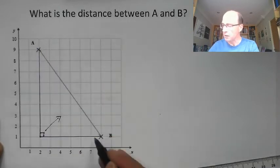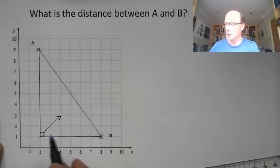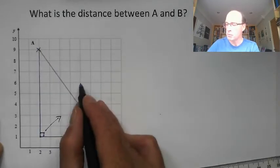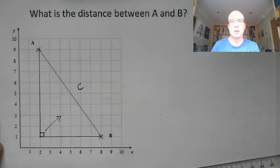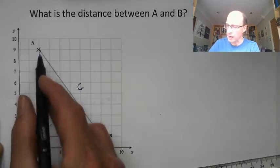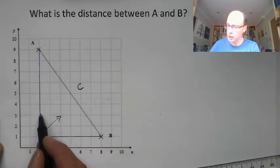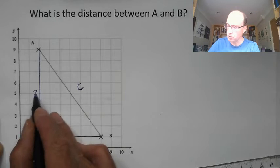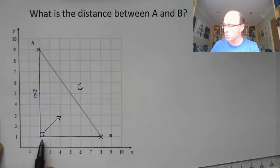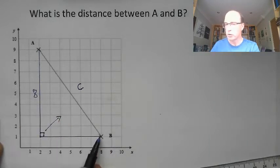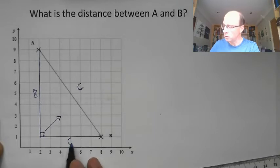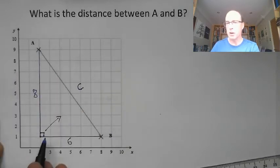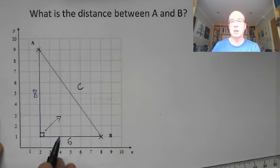So the length AB that I'm trying to work out is opposite my right angle, so it must be my hypotenuse, my longest side, which I'm going to call C. Well I also know how long these are, because I can count my squares. I've got 2, 4, 6, 8 squares. And across the bottom I've got 2, 4, 6 squares there. So I've gone 6 squares across, 8 squares up, got a right angle triangle, so I can use my Pythagoras to work out what that length C is.